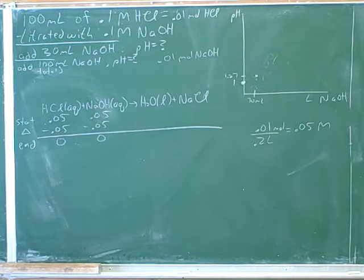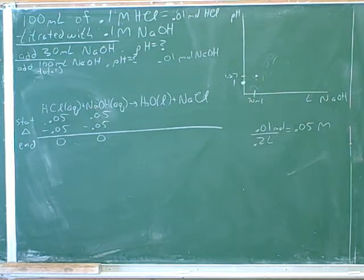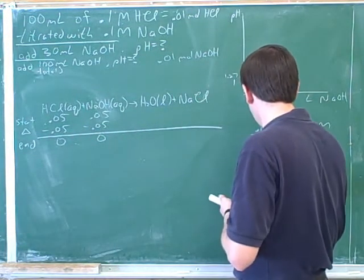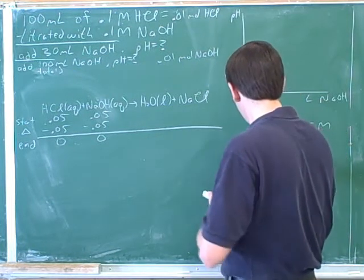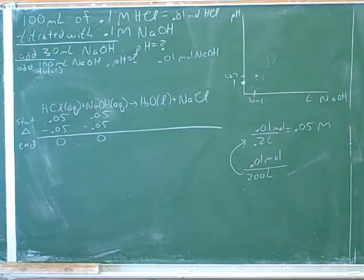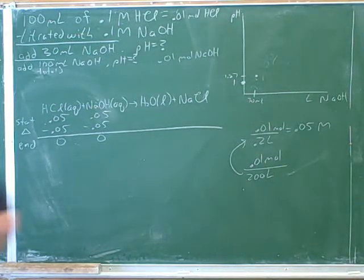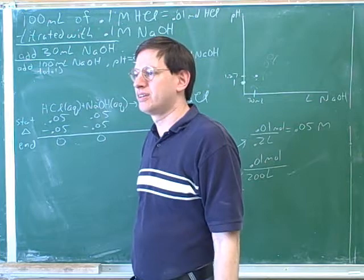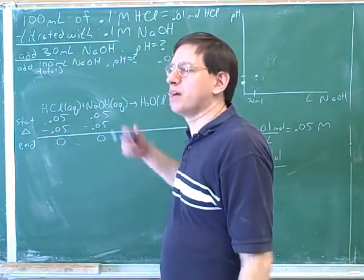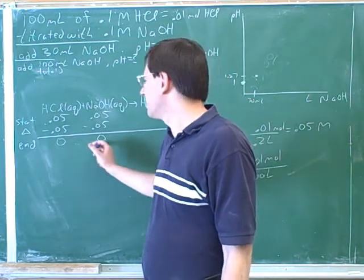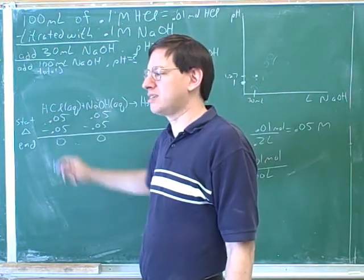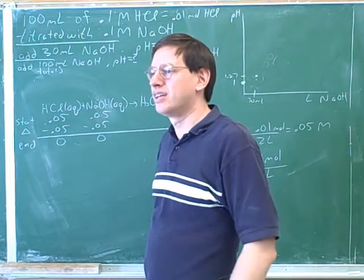This should be 0.01 divided by 0.2, right? 200 milliliters is 0.2 liters. So that gave us the 0.05 concentration for both. That would mean we'd end up with zero concentration of both. Now remember we're going to have to use one of the cases above the thick line. Which case are we in? We don't have any HCl.